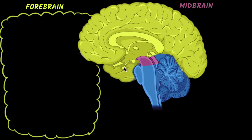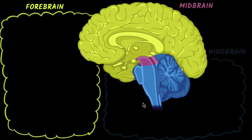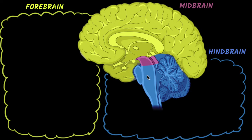You might think that the midbrain is the middle section, but no — that is still part of the forebrain. The midbrain is a very tiny section. It is actually connecting the forebrain to the last part, the hindbrain. The hindbrain is this part over here, which also contains the brain stem.